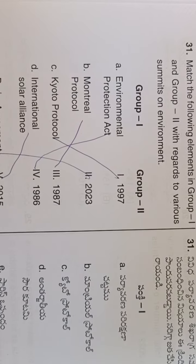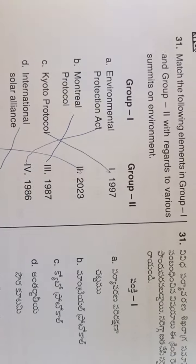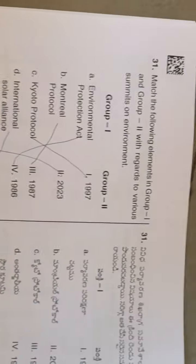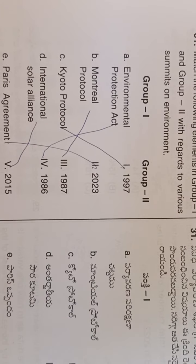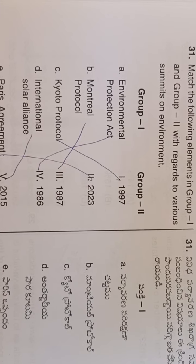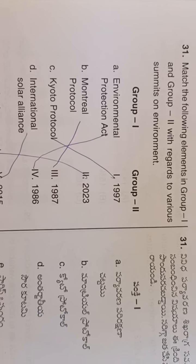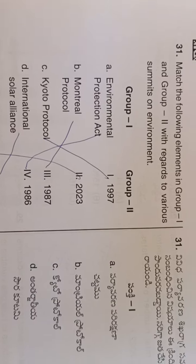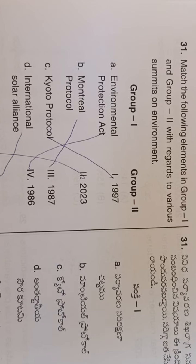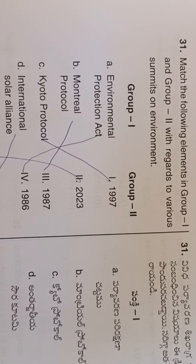Namaskar Dear Students. APSET Exam Paper No. 1, Unit No. 9 - Environment. There are 5 questions here.